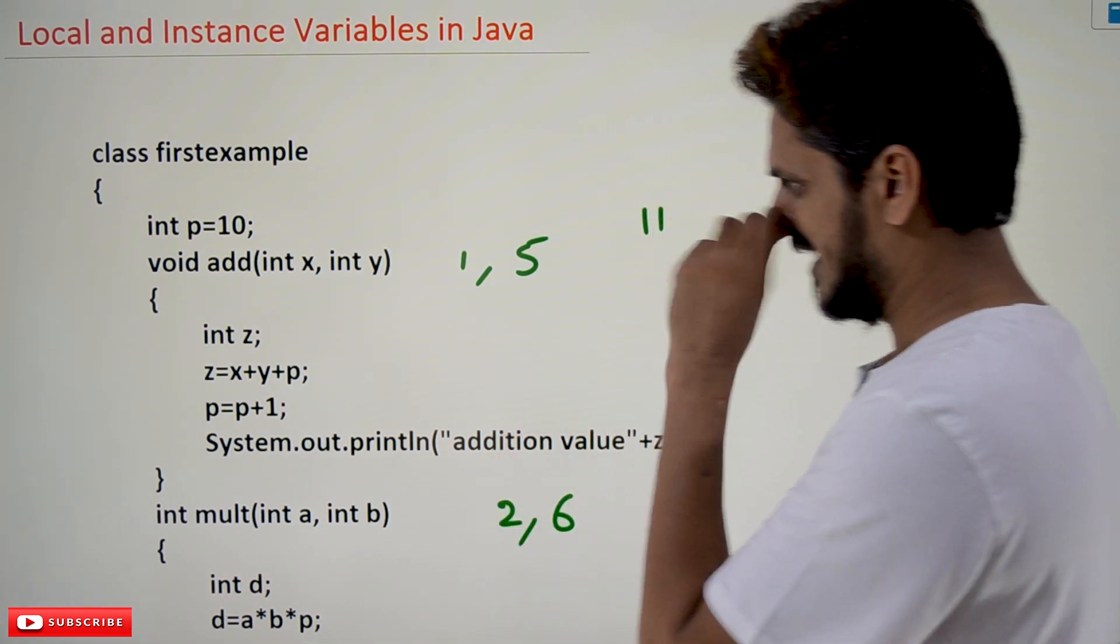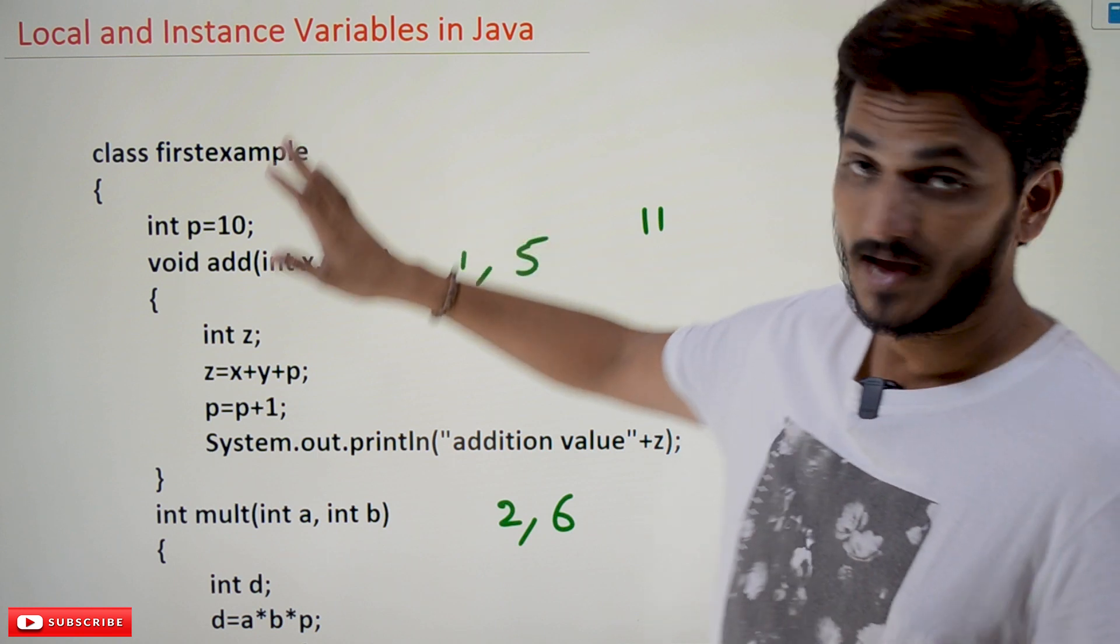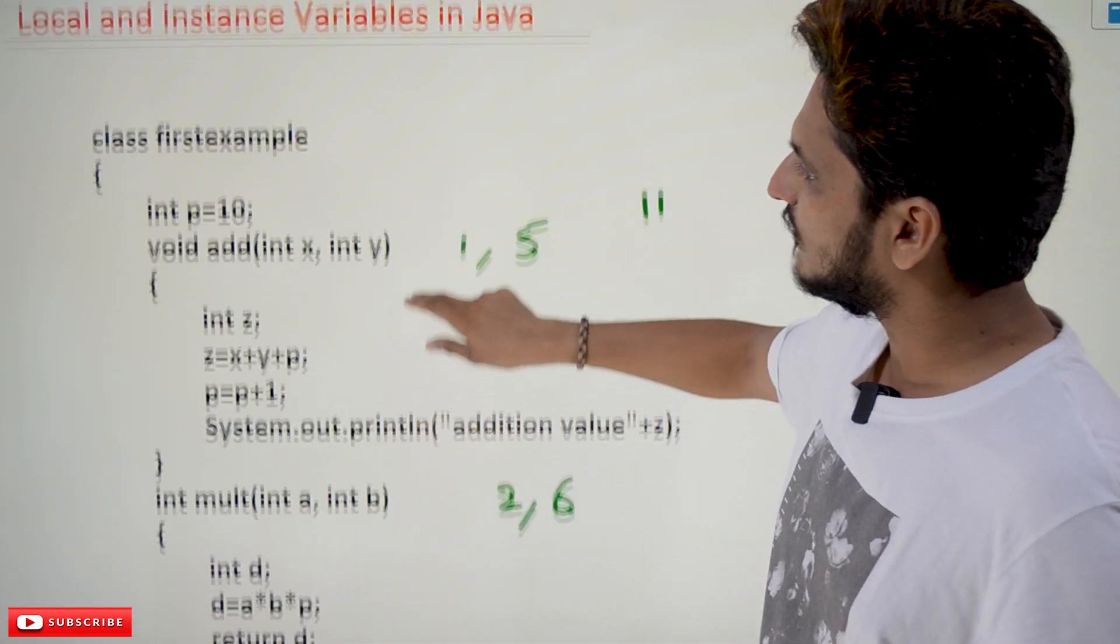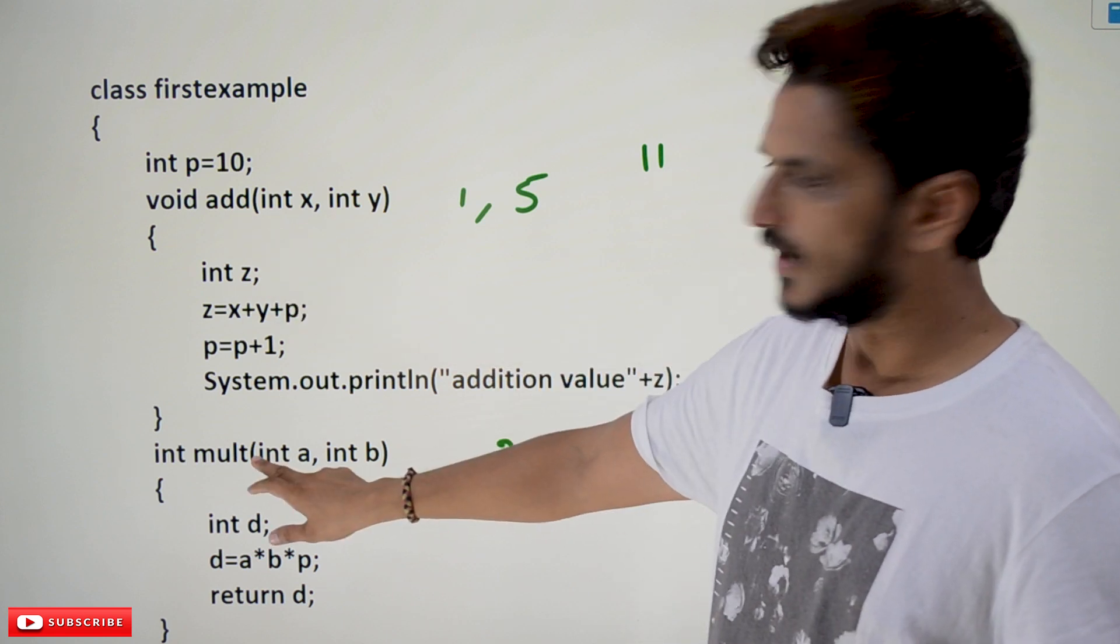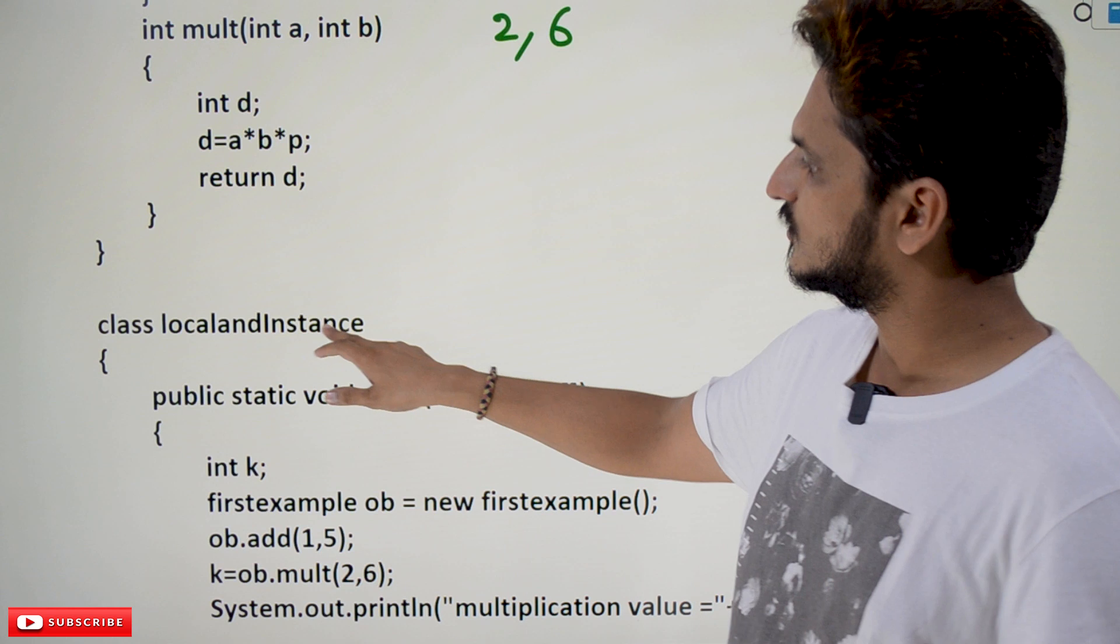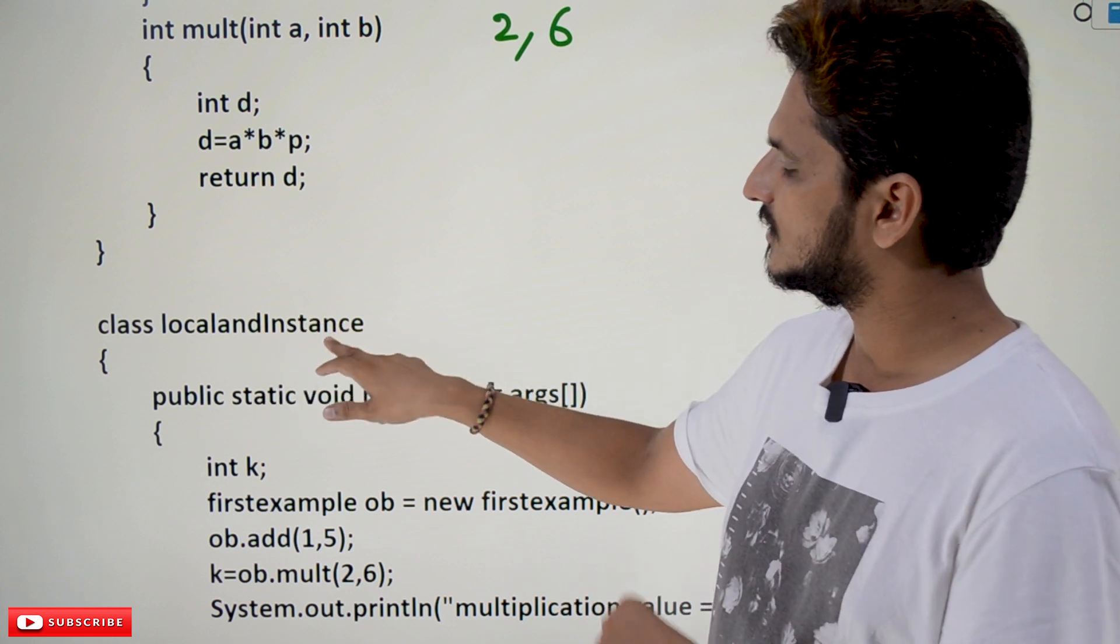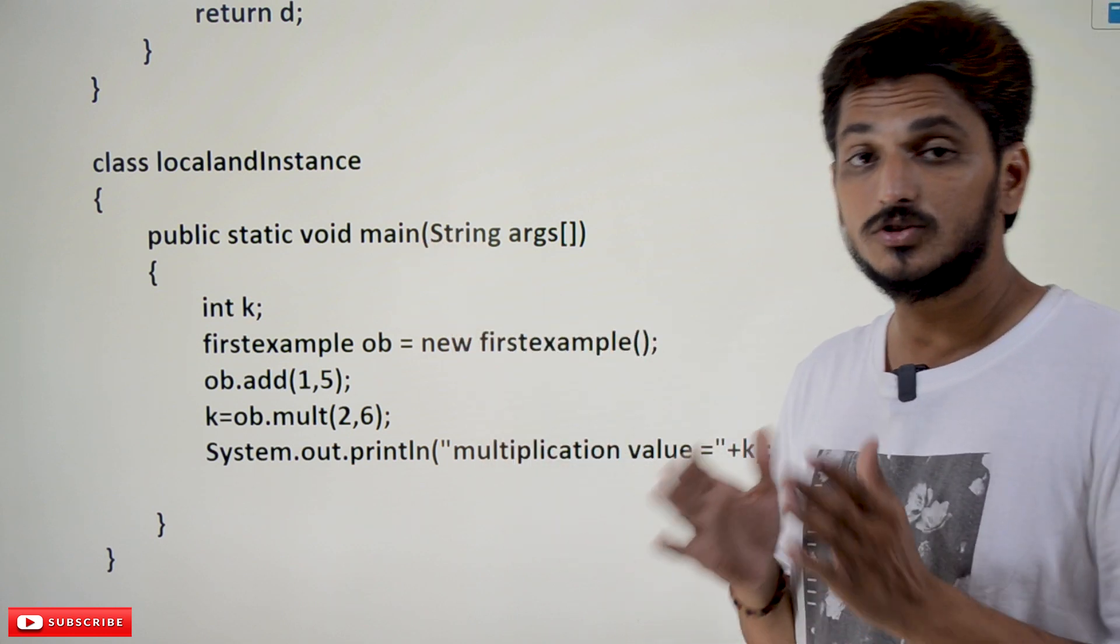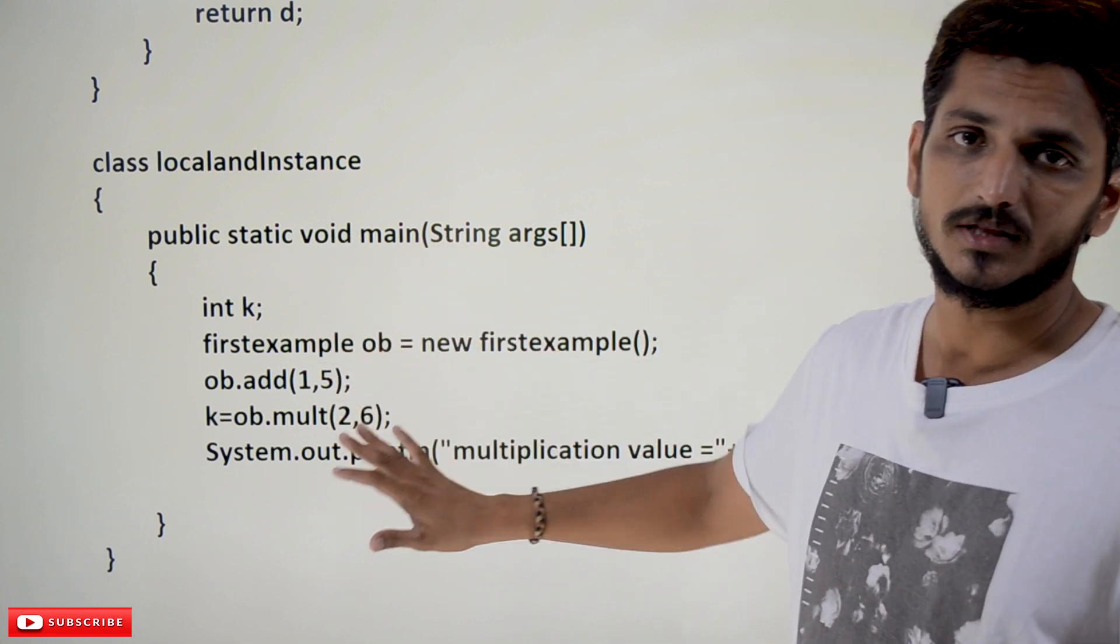Coming to today's class. In our last class example, we are having two classes. Class first example. In this class, we are having two methods: add method and multiply method. Similarly, in the next class, local and instance. We changed this name. Local and instance second class. In this class, we are having a main method. The execution starts in the main method.